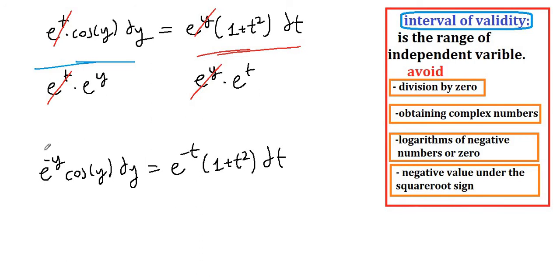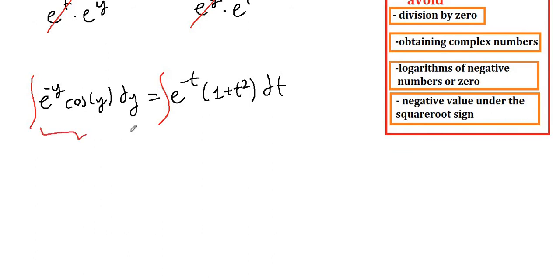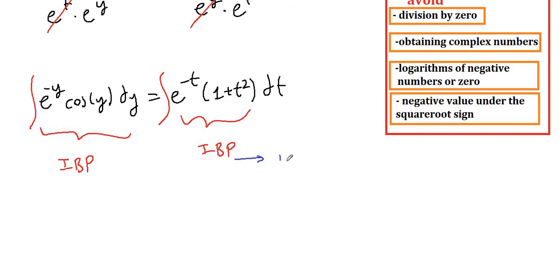Now we can integrate both sides. Observing each side, we can see that both require integration by parts. I have a full video about integration by parts. Let's remember the formula: u times v minus the integral of v du. We pick some function u and dv, then determine du and v.